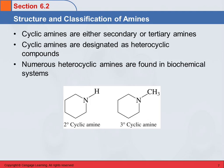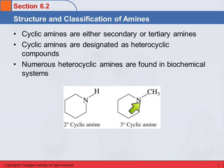We can also have cyclic amines, which are always going to be either secondary or tertiary — you can't have a primary cyclic amine, because for the nitrogen to be part of the ring, it necessarily has to be bonded to two carbons. Cyclic amines are always heterocyclic compounds, and many of them are found in biochemical systems, making them quite important in biochemistry.